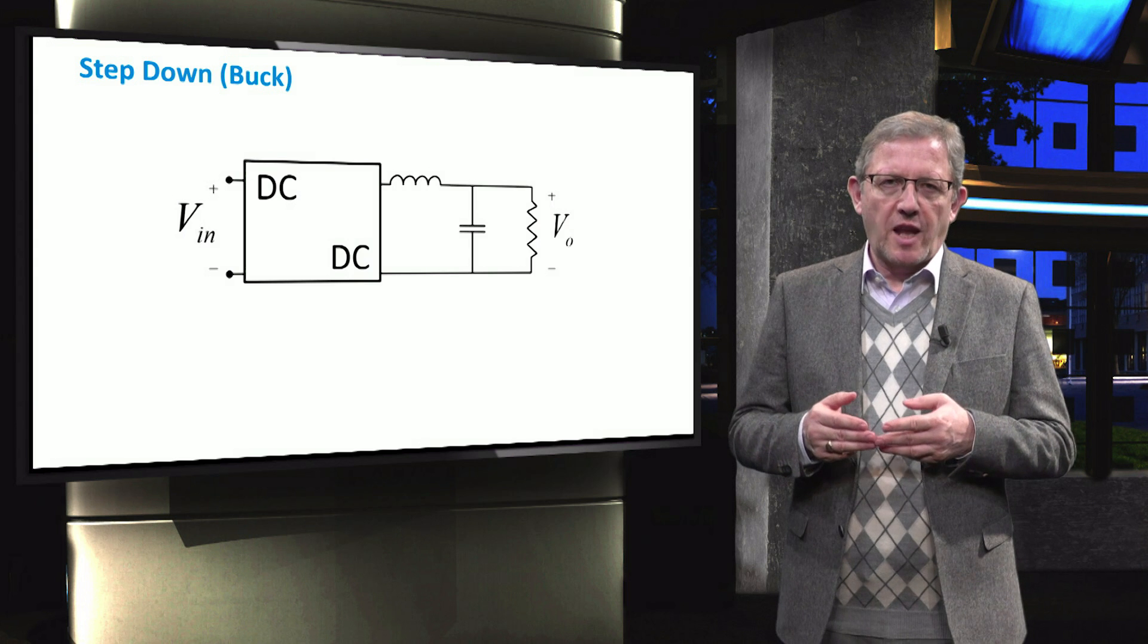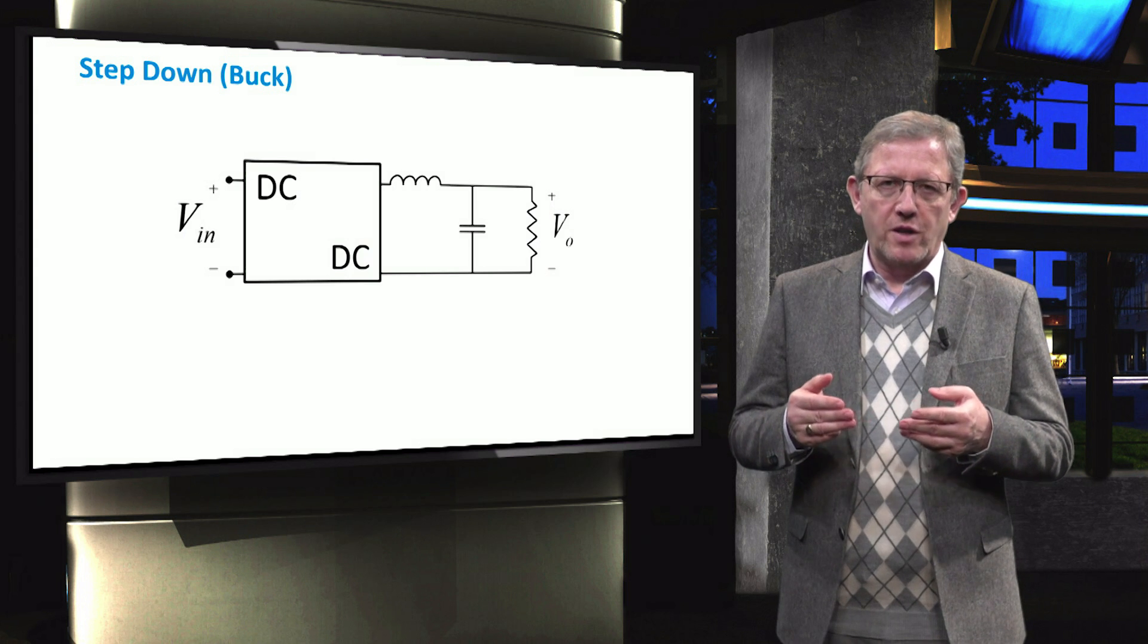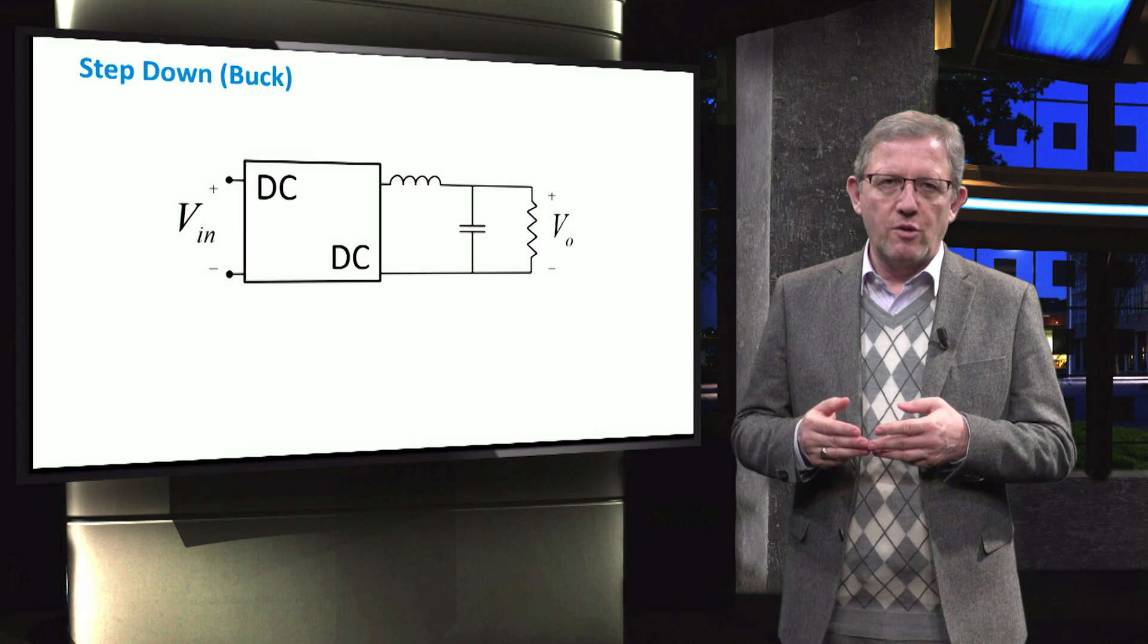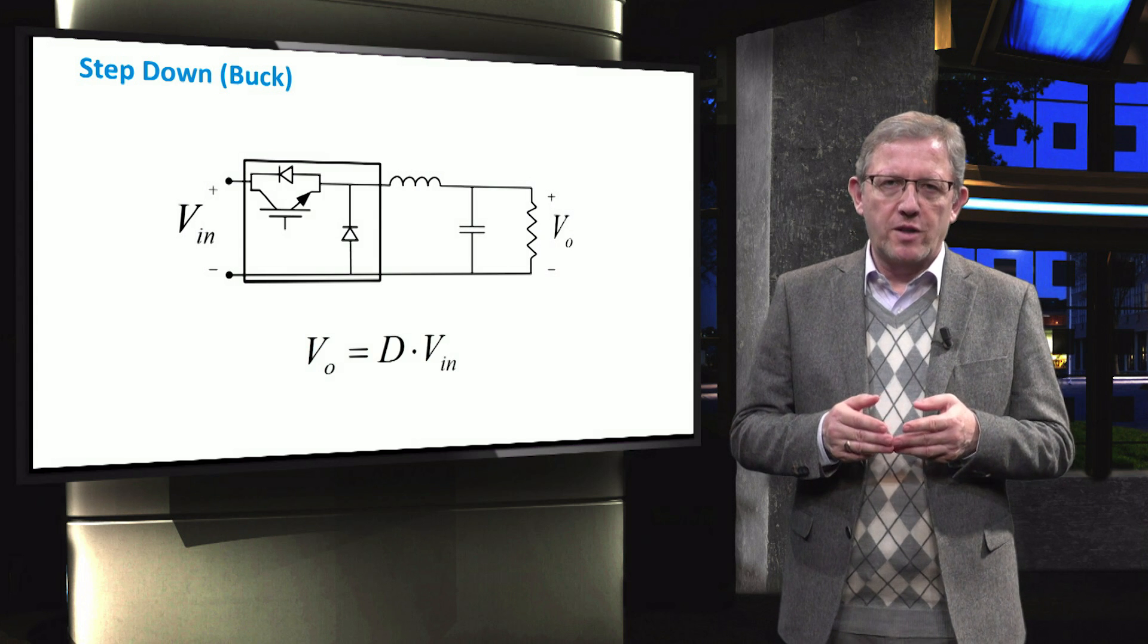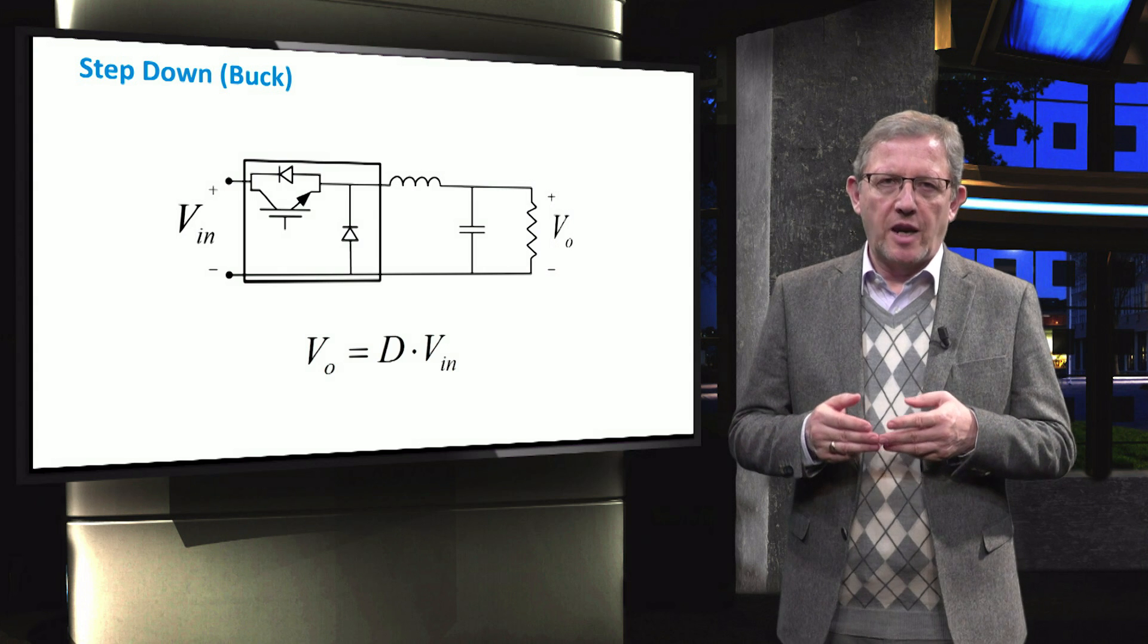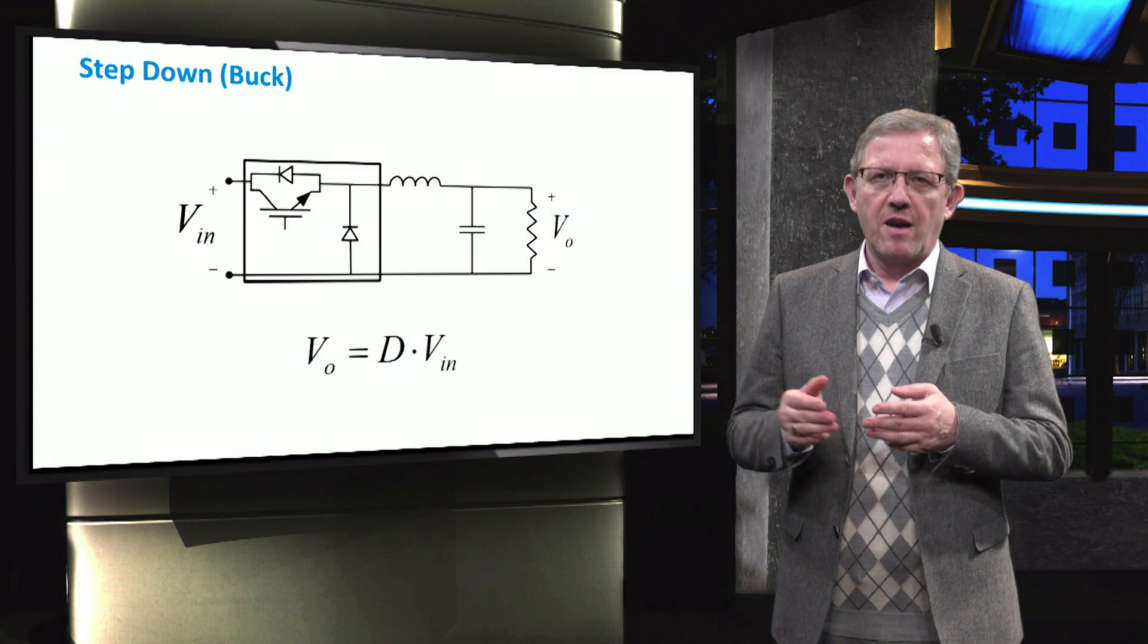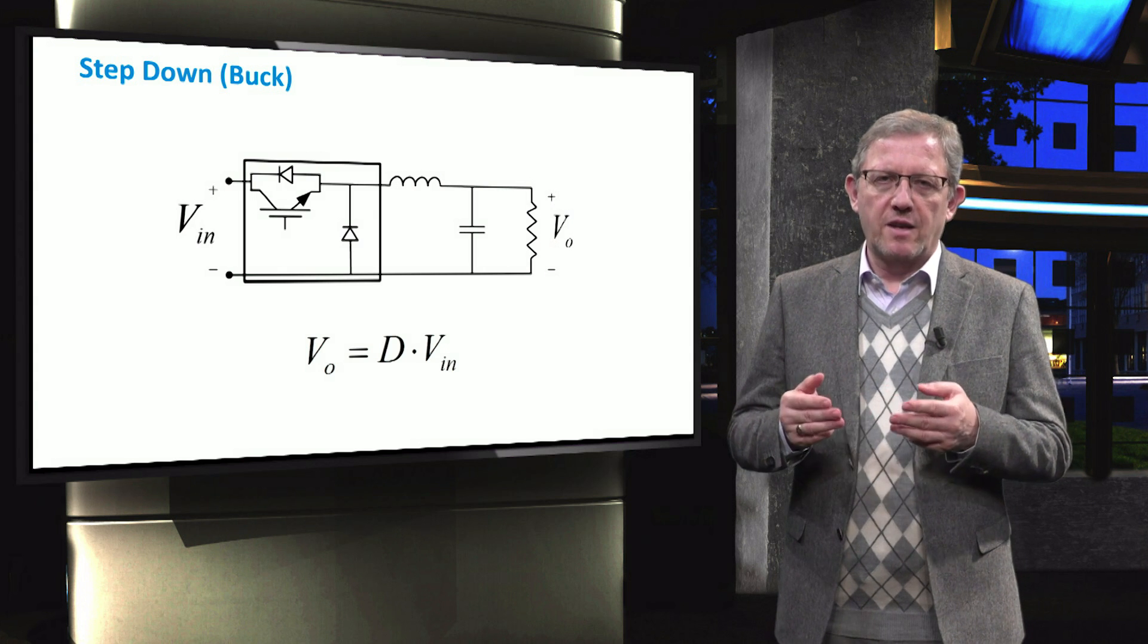As we introduced before, the step-down or the so-called buck converters are widely used to reduce the level of the input voltage. The output voltage of a buck converter is calculated by the input voltage multiplied by the previously introduced duty cycle, D.